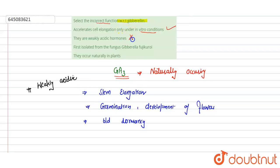First isolated from the fungus Gibberella fujikuroi - this is also correct statement. Firstly these were isolated from the Gibberella fujikuroi in 1926 in Japan by a Japanese scientist who isolated this from this fungus. So this is also a very correct statement but incorrect option.